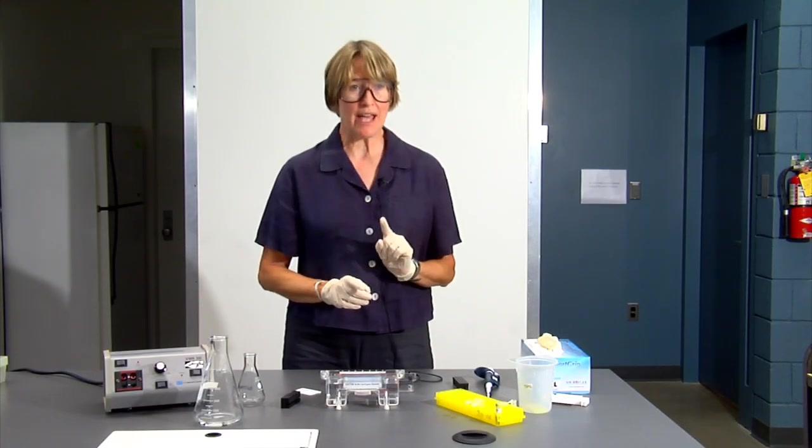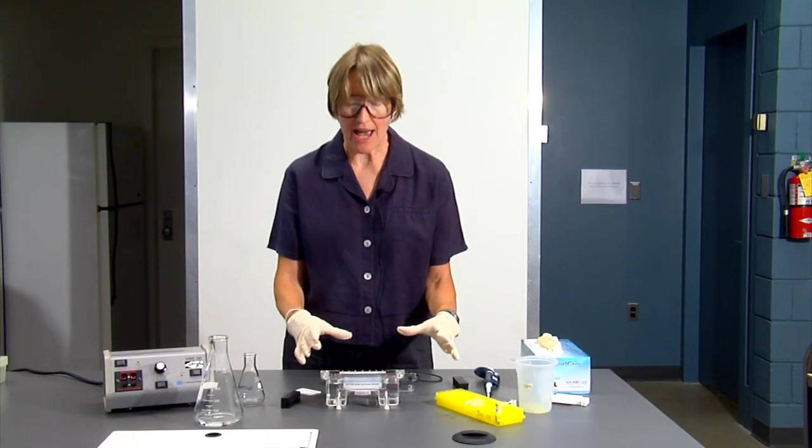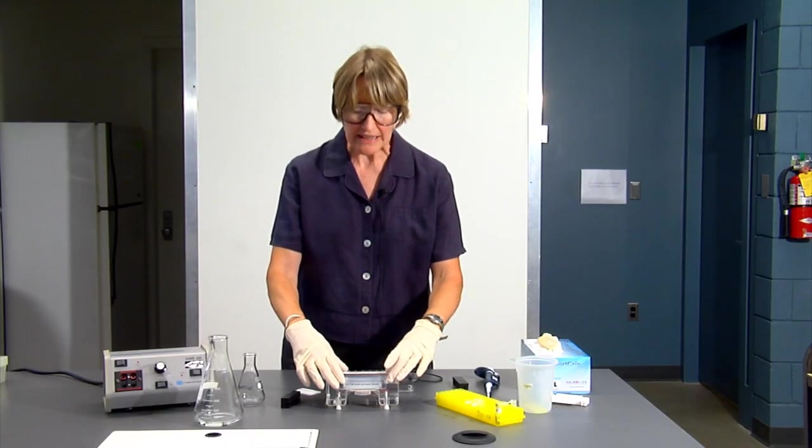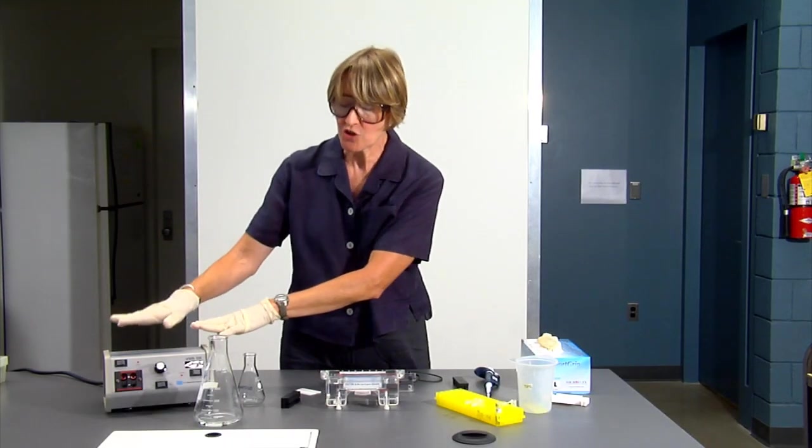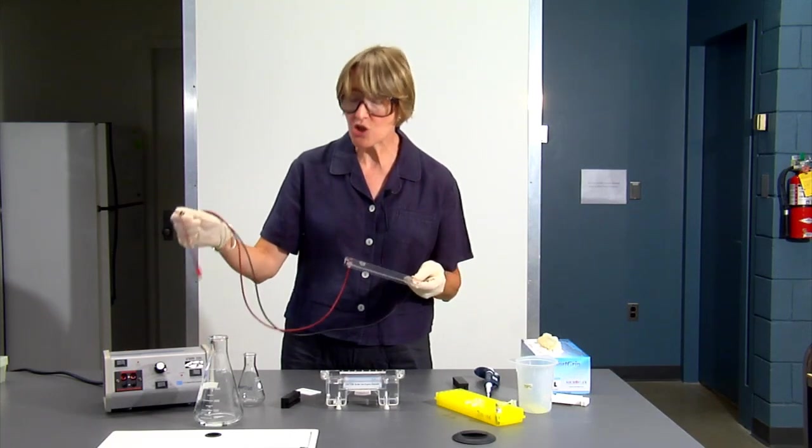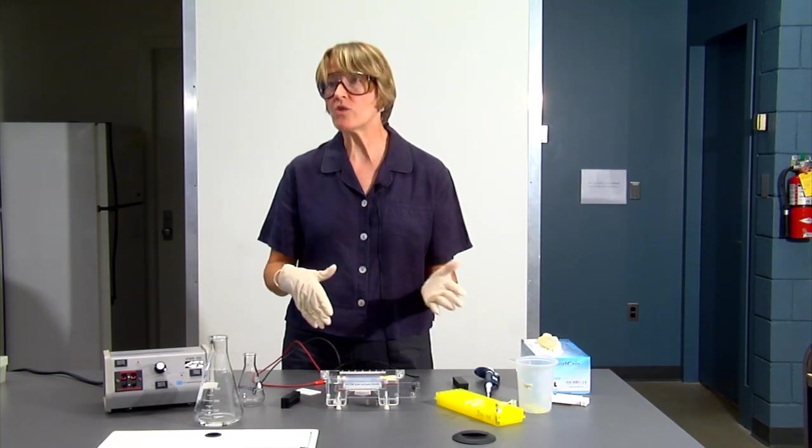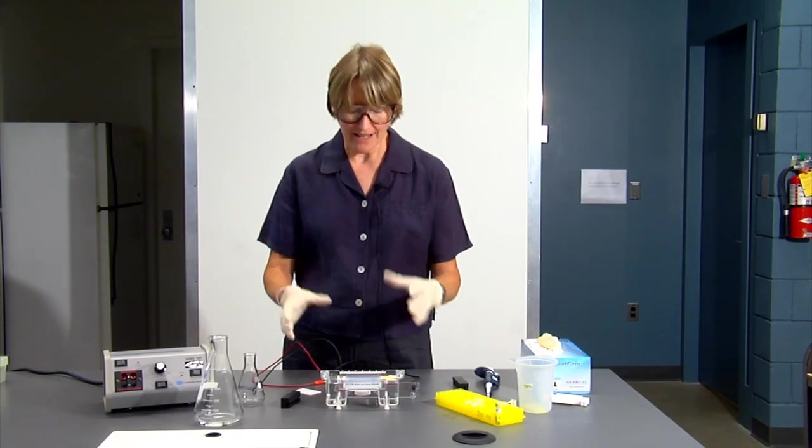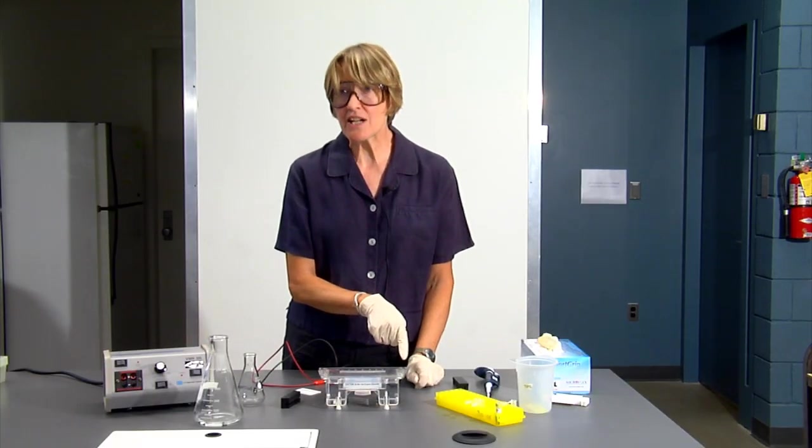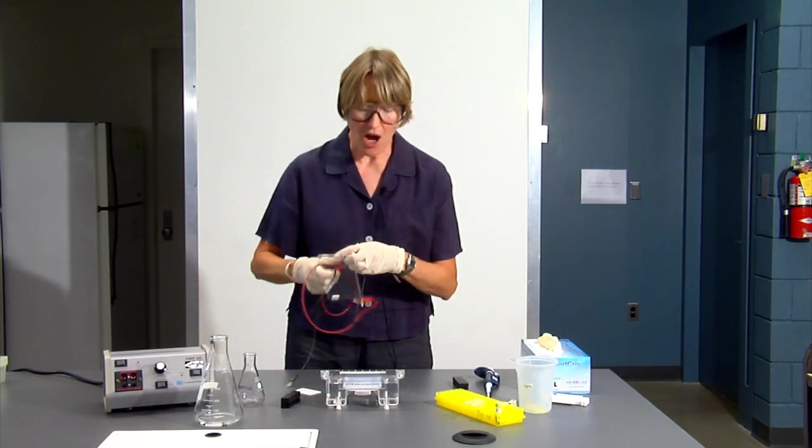Before you load your sample, there are a couple of things you want to make sure that you do. Once the sample is loaded, you don't want to have to move the gel box around because you could slosh the samples out of the wells. Make sure that wherever you finally load the samples, you are close enough to your power supply so that you can attach the electrodes on the lid to the power supply and you won't have to move the gel box. Also make sure the gel box is in a safe place where it won't get knocked off the bench. Check to make sure that your wells are at the negative electrode because you do not want to have to move this around once your samples are in the wells.